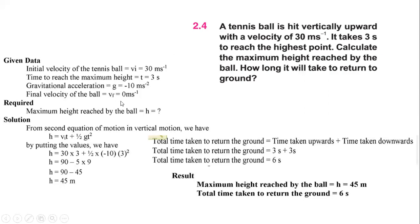We need to calculate the maximum height. Using the second equation of motion: H = VI·T + ½·g·T². VI = 30, T = 3, g = −10. Calculating: 90 + ½ × (−10) × 9 = 90 − 45 = 45 meters. The ball reaches a maximum height of 45 meters.